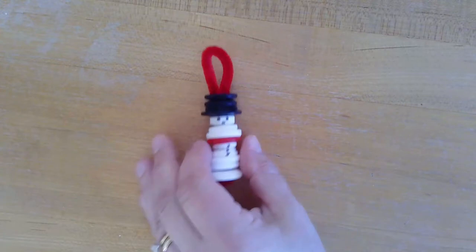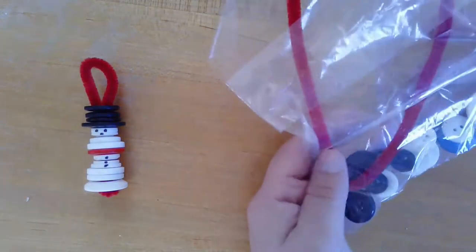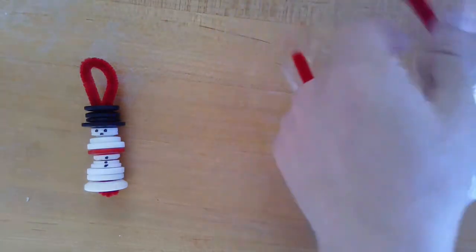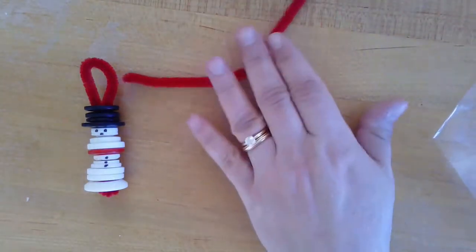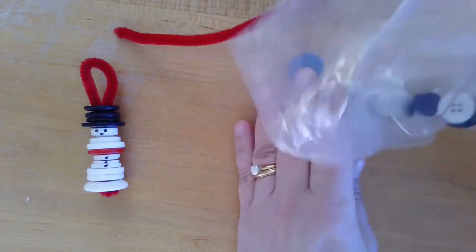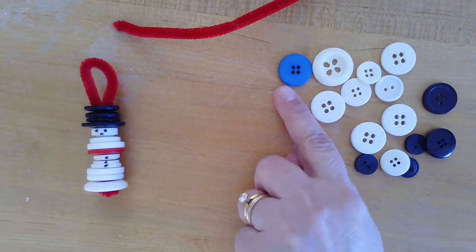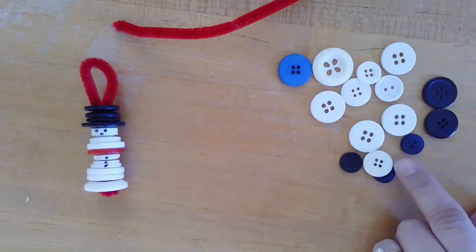In your kit you will find a pipe cleaner and a selection of buttons. You'll have white for the snowman, black for his hat, and blue or red for a scarf.